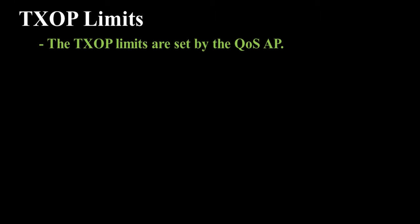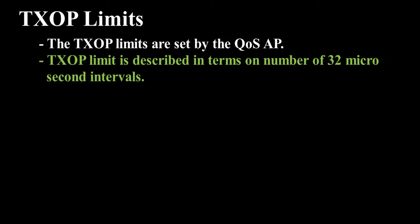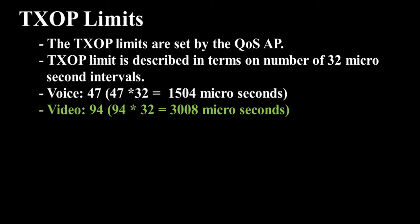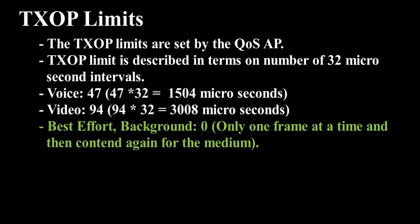TXOP Limits. The TXOP limits are set by the QoS access point and are described in terms of the number of 32-microsecond intervals. Typical values for TXOP limits for OFDM are: Voice — 47, which equals 47 multiplied by 32 equals 1,504 microseconds. Video — 94, which equals 94 multiplied by 32 equals 3,008 microseconds. Best effort and background — 0, meaning only one frame at a time, then contend again for the medium.